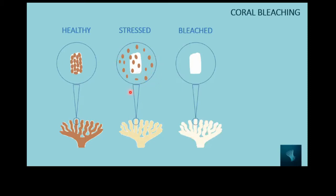As the symbionts are expelled, the coral structure will no longer look brown but will start looking paler. The more symbionts move out, the paler it looks. Eventually the coral will be completely bleached — all the symbionts are gone and the coral looks white. It doesn't mean it's dead, but there's no more algae giving it color; you're looking straight through the transparent tissue onto the white skeleton.